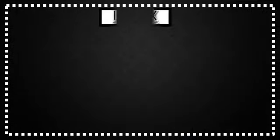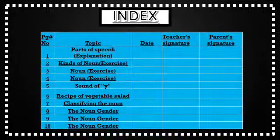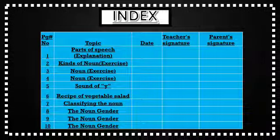Masculine gender: a noun that denotes male sex is called masculine gender. We can form the feminine gender by adding the syllable 'ess' after dropping the ending vowel. Now let's start the exercise.